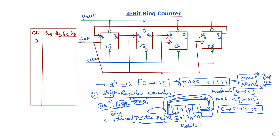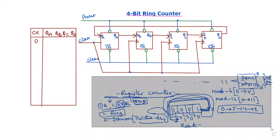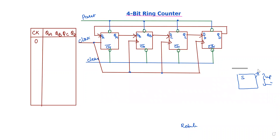Let's talk about the ring counter. The ring counter has a specific connection. We use the shift register concept to connect a circuit diagram. We connect the counter using a group of flip-flops. For 4 bits, we connect 4 flip-flops.